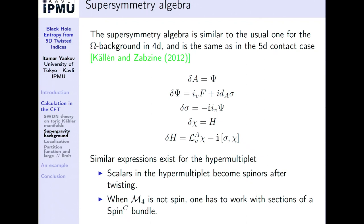The supersymmetry algebra is almost the same as the usual one for the omega background in four dimensions, and specifically it's the same as in the 5D contact manifold case. I've written it in twisted variables, which are most convenient here. I redefined some spinors and some auxiliary fields to get these simple supersymmetry transformations that look cohomological. For hypermultiplets, you would also need to twist the scalars, involving spin-C bundles rather than spin bundles. You can put this on any M4 which is Tor-Kahler, whether or not it has a spin bundle.